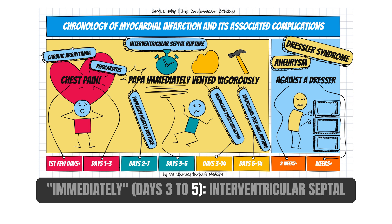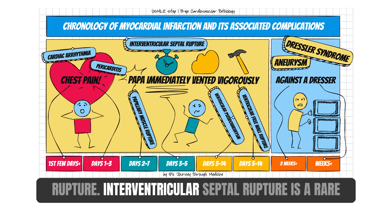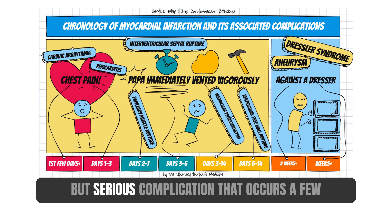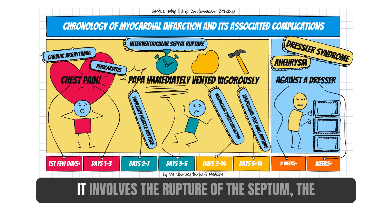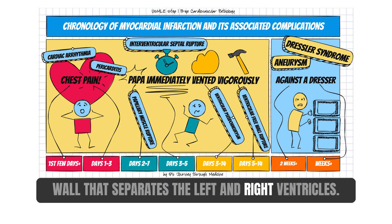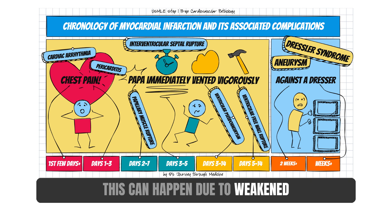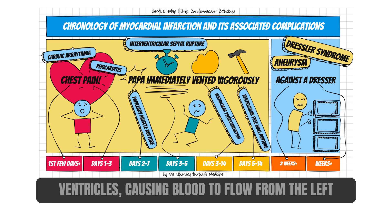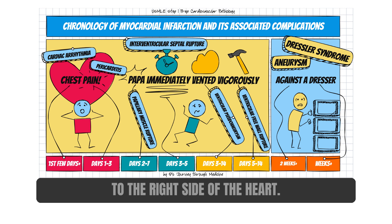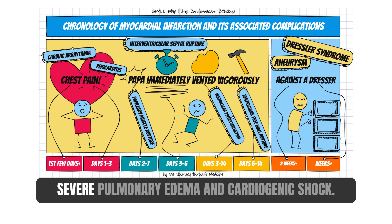Immediately — days 3 to 5 — interventricular septal rupture. This is a rare but serious complication that occurs a few days after a myocardial infarction. It involves the rupture of the septum, the wall that separates the left and right ventricles, due to weakened tissue in the infarcted area. The rupture leads to a communication between the ventricles, causing blood to flow from the left to the right side of the heart, resulting in mild to severe pulmonary edema and cardiogenic shock.